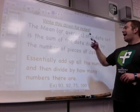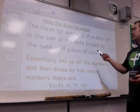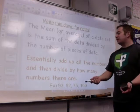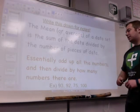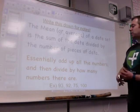I want you to write this down for notes. The mean or average of a data set is the sum of the data divided by the number of pieces of data. Essentially, add up all the numbers and then divide by how many numbers there are.